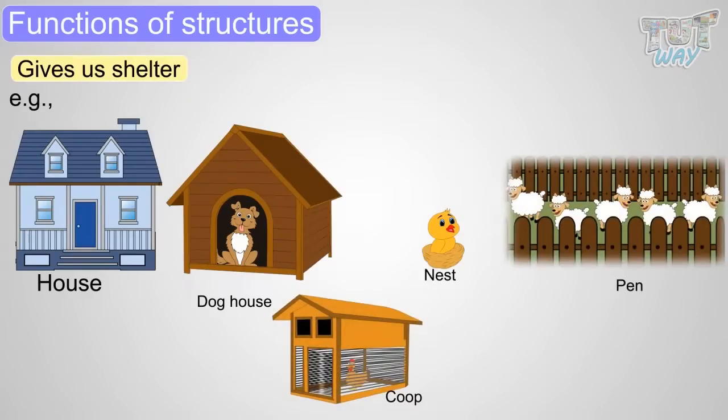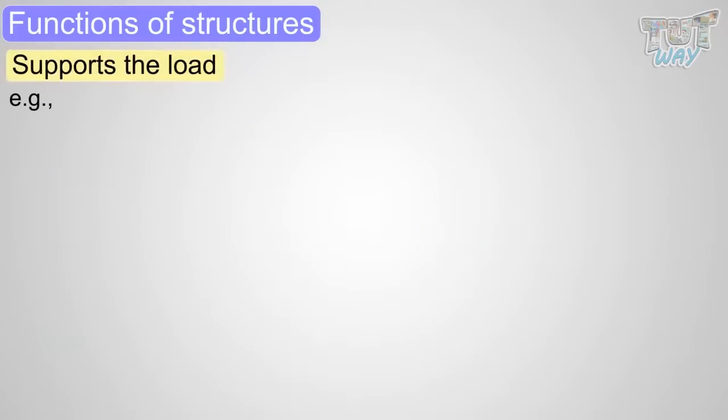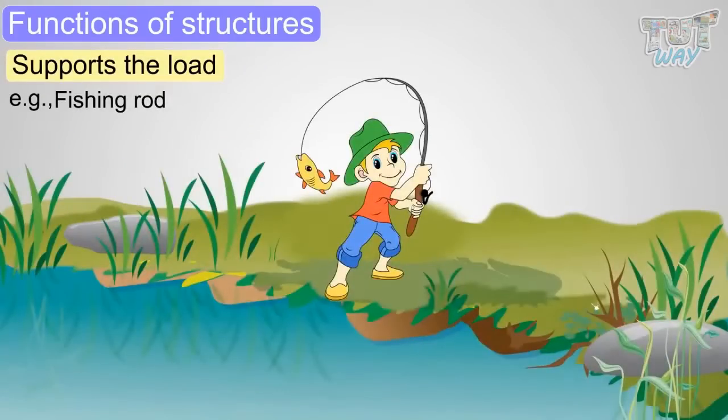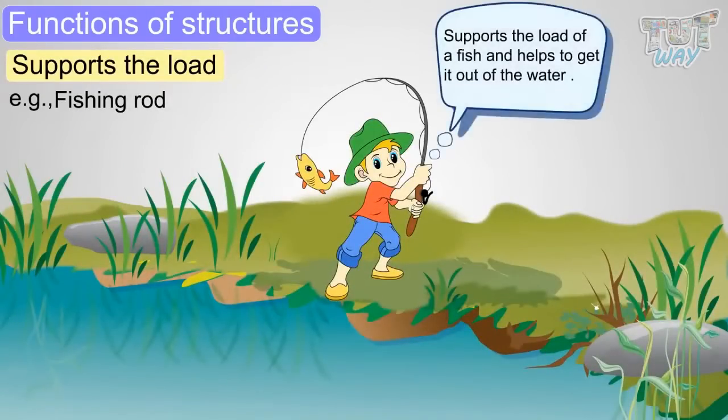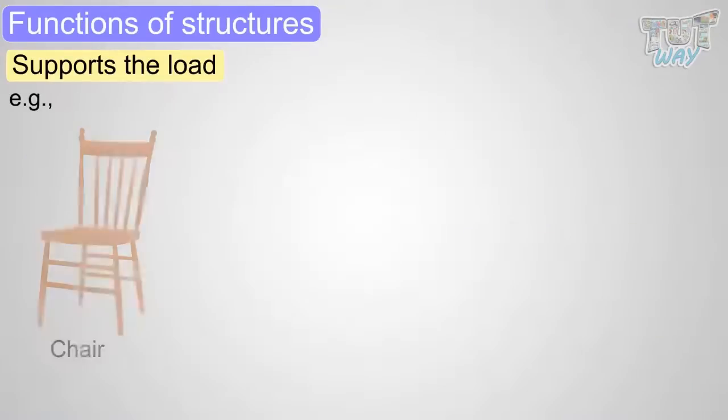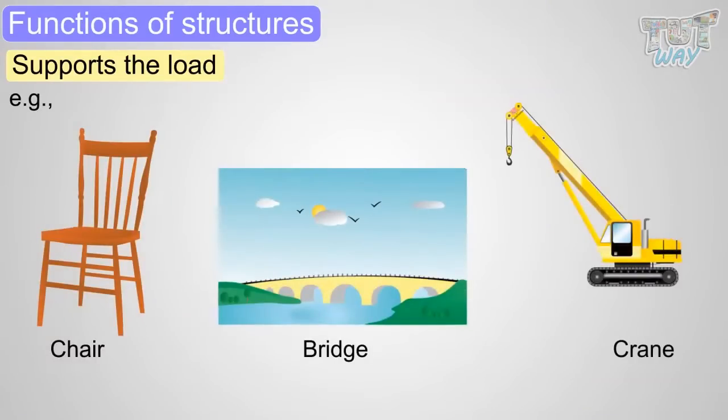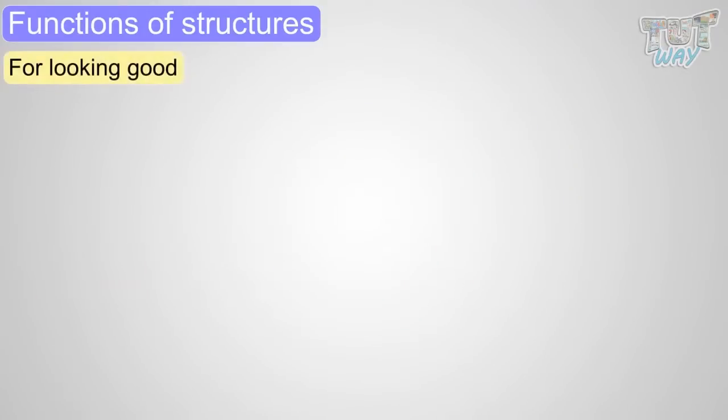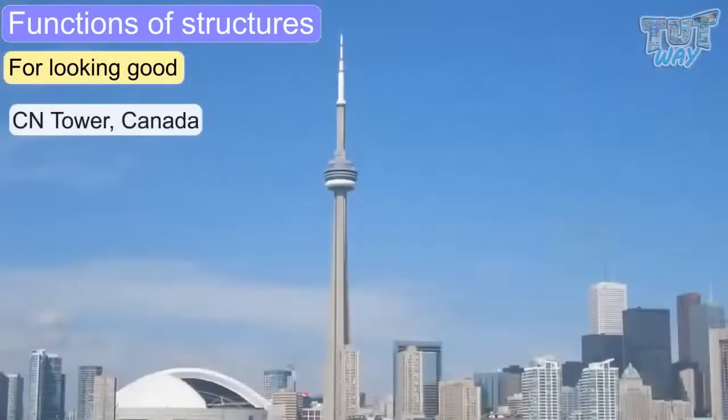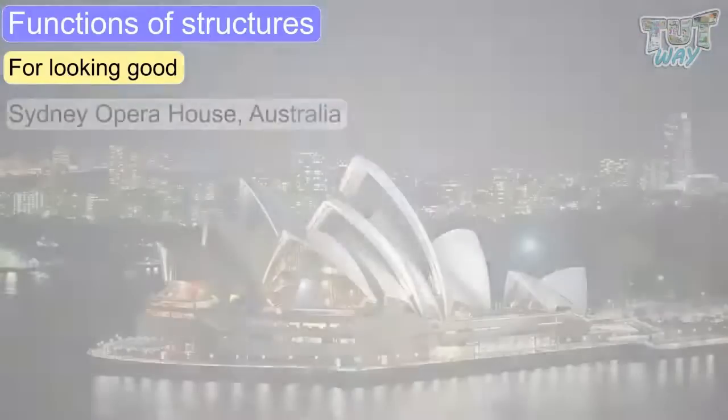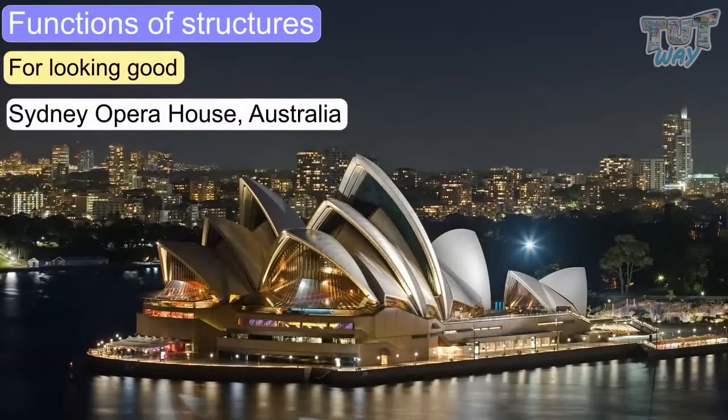Structures also help to support a load, like fishing rods, which support the load of a fish. Chair, bridge, crane, all are examples of structures that help to support a load. Structures are also made of aesthetic value or looking good, like CN Tower Canada, Sydney Opera House Australia.